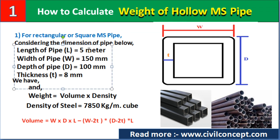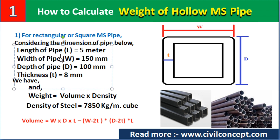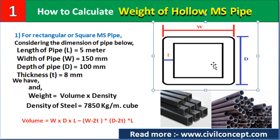First, we will calculate the weight of a rectangular or square MS pipe. Considering: length of pipe is 5 meters, width is 150 mm, depth is 100 mm, and thickness is 8 mm. As you can see in the picture, this is a rectangular pipe with width 150 mm, depth 100 mm, and thickness 8 mm.